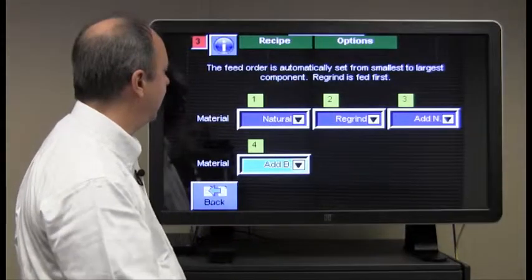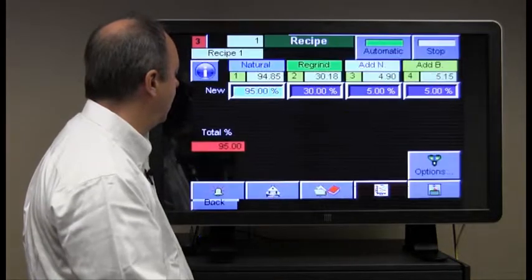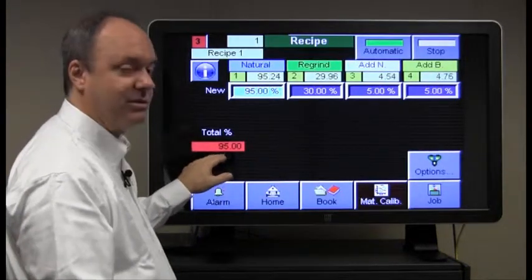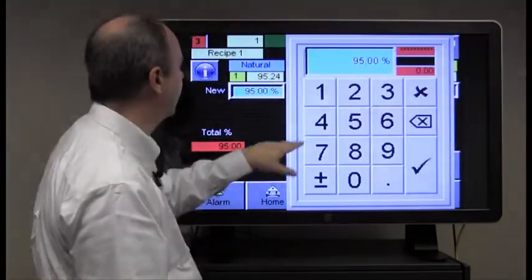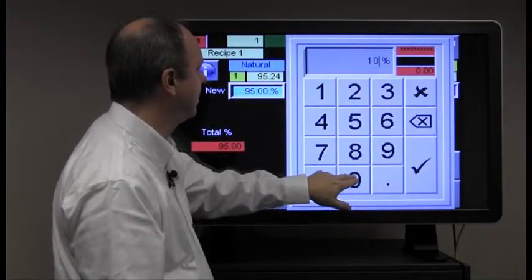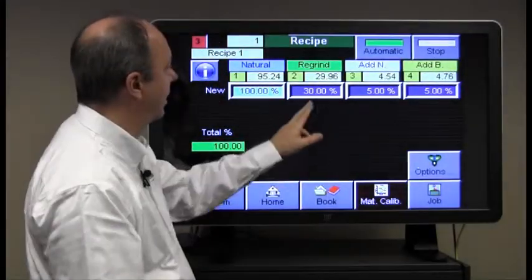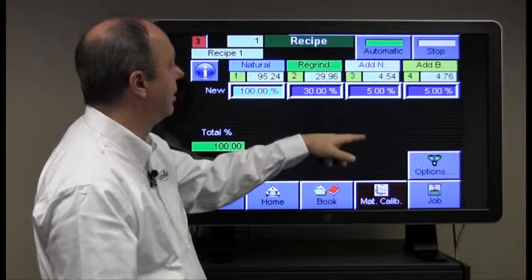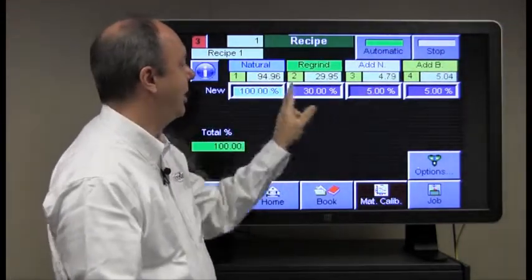So return back to the main recipe screen. And again you can see we have the warning again that the naturals do not add to 100. So we'll change that. The only natural remaining is this one. It's 100. Again 30% regrind. 5% will be 5% of this. So this has actually become a ratio now. It's a 100 to 5 ratio.